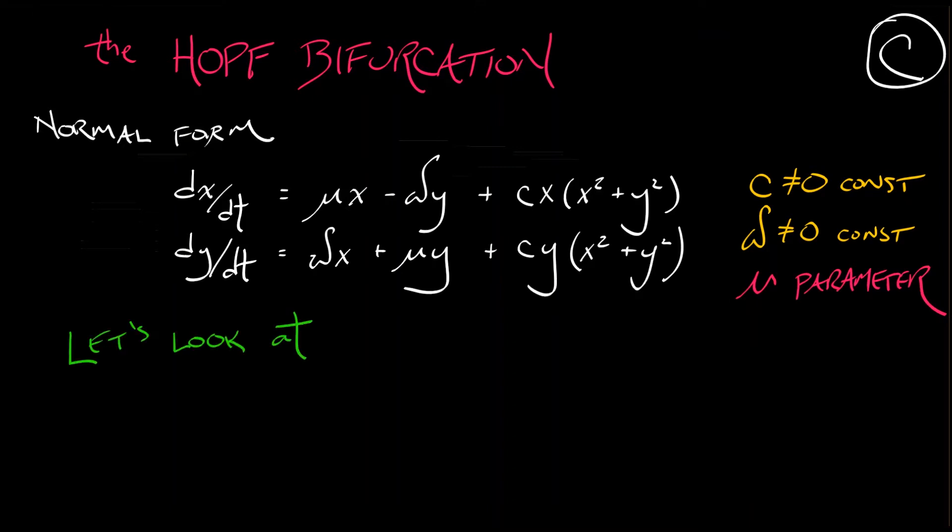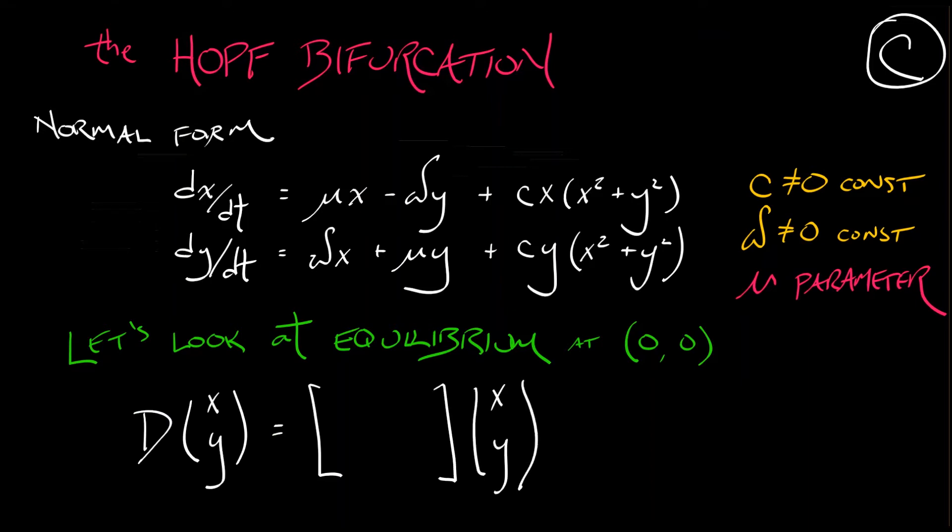Now, this system has an equilibrium at the origin. That's the only equilibrium that is in this system. Let's take a look at what is happening at the origin by writing this out in a linear form. So if I think about the derivative of my vector-valued variable x and y, then I have the linear part out in front that is represented by multiplying x, y by the matrix mu, omega, minus omega, mu. And then I've got the non-linear terms, this constant c times x times x squared plus y squared and y times x squared plus y squared. Now, writing it out in this way is going to make it very easy to analyze this equilibrium.